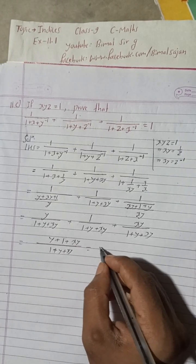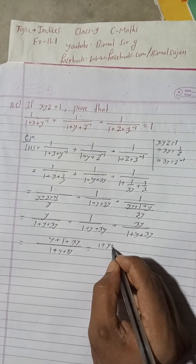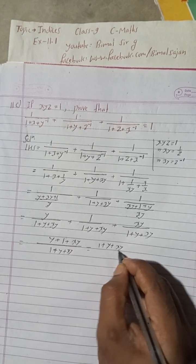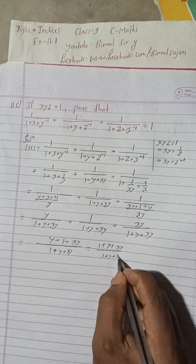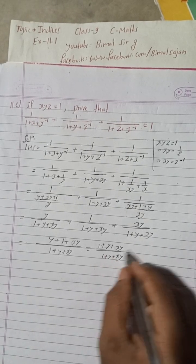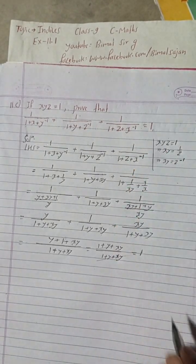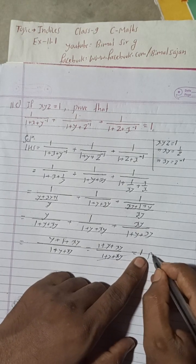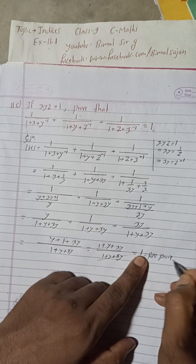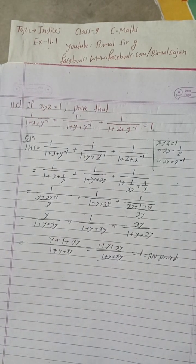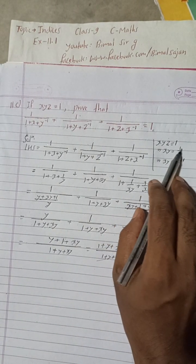So we get (1+y+xy)/(1+y+xy), and these are the same, so we can cancel this. So this is 1, so we got RHS proved, is equal to RHS proved. So this is the complete solution I have written in the rough part.